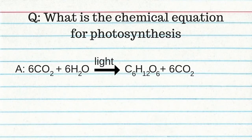What is the chemical equation for photosynthesis? 6CO2 + 6H2O + light → C6H12O6 + 6O2. Plants get CO2 from stomata, which are small pores at the bottom of a leaf where water vapor and oxygen also exit. Plants get water through their roots.